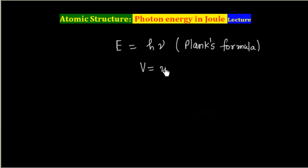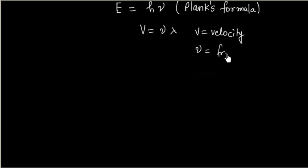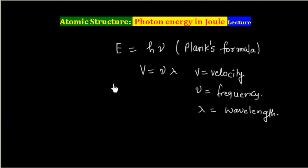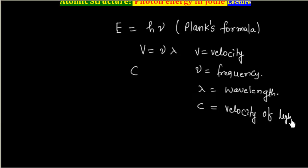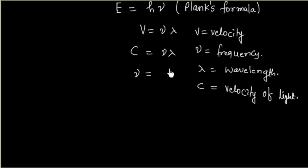We also know that V = νλ, where V is the velocity, ν is the frequency, and λ is the wavelength. Since all electromagnetic radiation moves with the velocity of light, and even photons move at the velocity of light, we can write V as C, where C is the velocity of light.